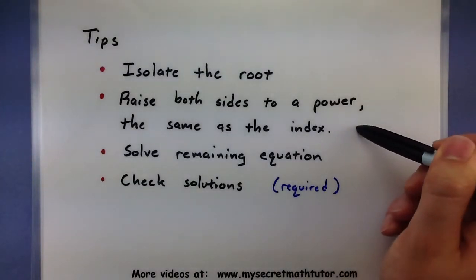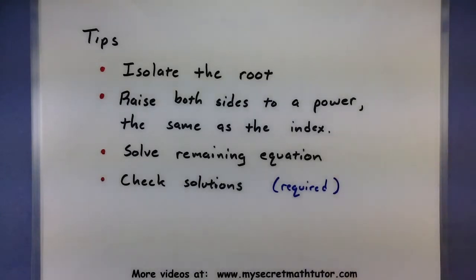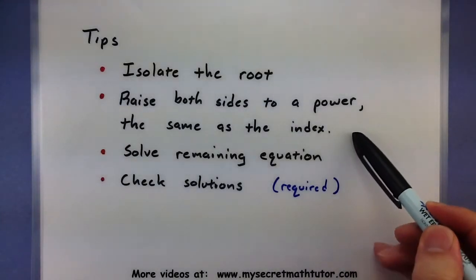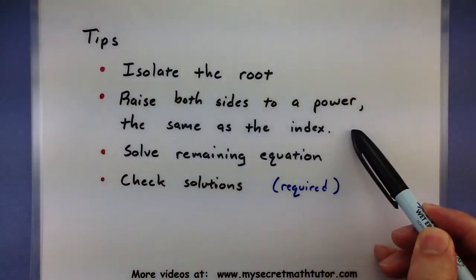Then go ahead and raise both sides to a power that matches the index of the root. That means if you're trying to get rid of cubed roots, you will cube both sides. If you're trying to get rid of fourth roots, then you will take both sides and raise it to the fourth power. So always keep those things the same.